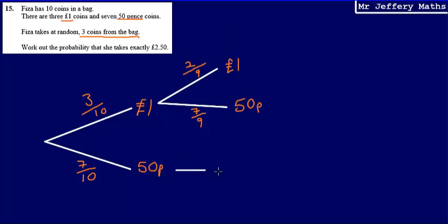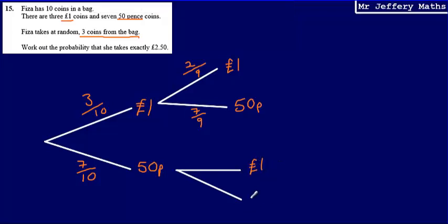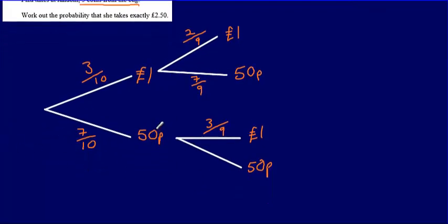That is a bit different if she were to select a 50p coin first, because if she chooses a 50p first, she could choose a £1 coin next or a 50p coin. There would still be three £1 coins in the bag, but only nine coins in total because she's removed one of the 50p's. That means there are only six 50p coins left out of nine.